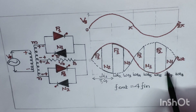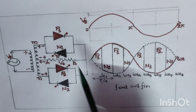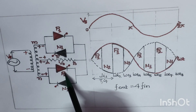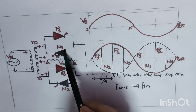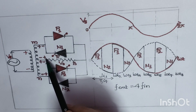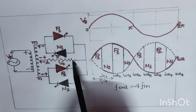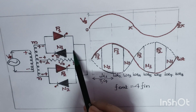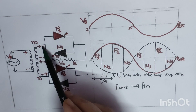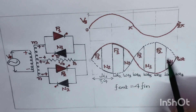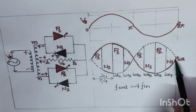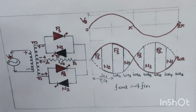At ωt7, we switch off thyristor P2 by force commutation and apply a trigger pulse to thyristor N1. Current flows from the positive polarity from A to B through resistance R, back through N1 to the negative terminal. The negative output voltage is traced from ωt7 until the angle ωt8, completing the cycle.